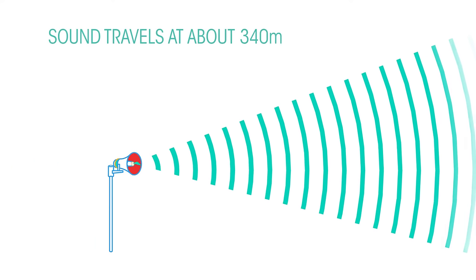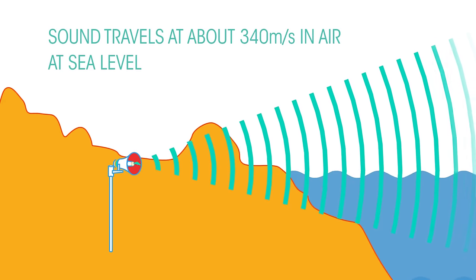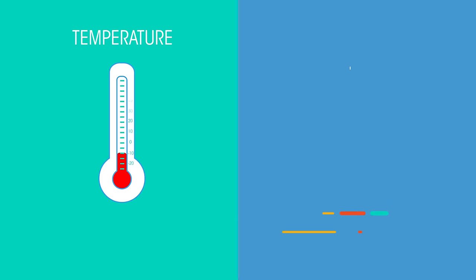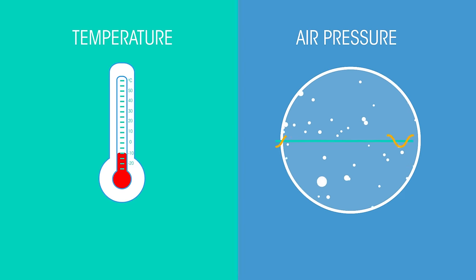Sound travels at about 340 meters per second in air, at sea level at 20 degrees Celsius. What does this tell us? That temperature and air pressure affect the speed sound can travel through air.